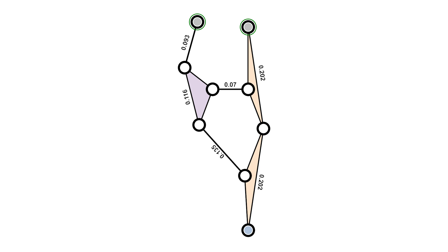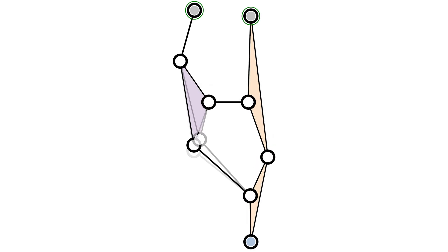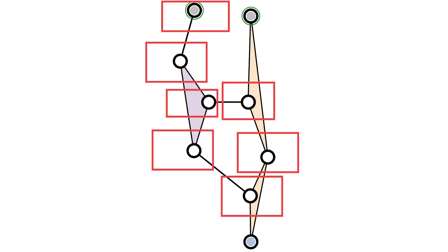Each movement of the spatial graph node changes the mechanism into a new one with different kinematics. The joints are provided with search bounds that determine the range of possible movements.